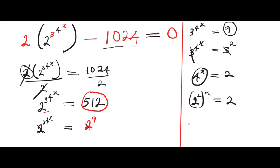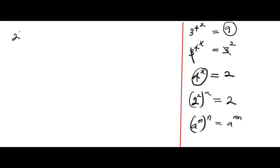From the law of indices, a raised to the power of m raised to the power of n equals a raised to the power of m times n. Applying this law here, we get two raised to the power of 2x equals two. This two can be written as two raised to the power of 2x equals two raised to the power of one, because two raised to the power of one is equivalent to two. Now the two bases are equal so they cancel, and we have 2x.